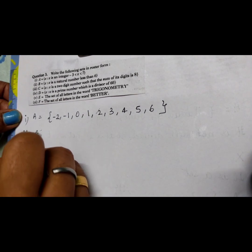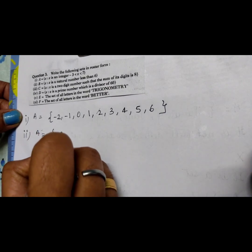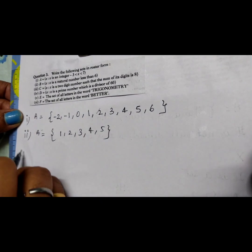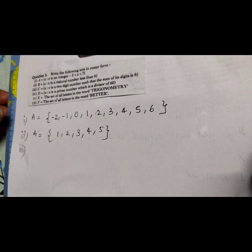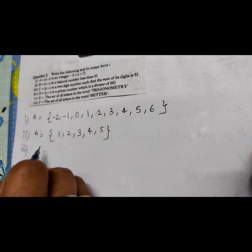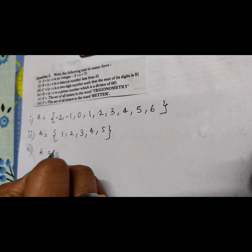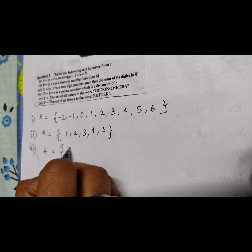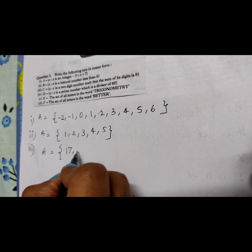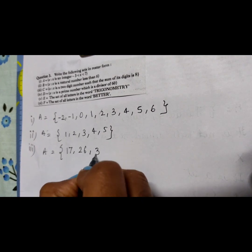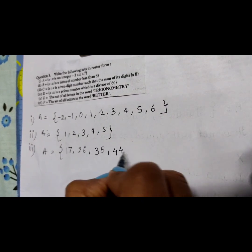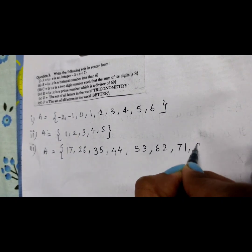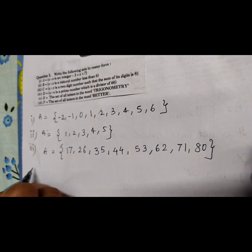The second part: x is a natural number less than 6, so the elements are 1, 2, 3, 4, 5. The third part C: sum of digits equals 8 — so the two-digit numbers are 17, 26, 35, 44, 53, 62, 71, 80.